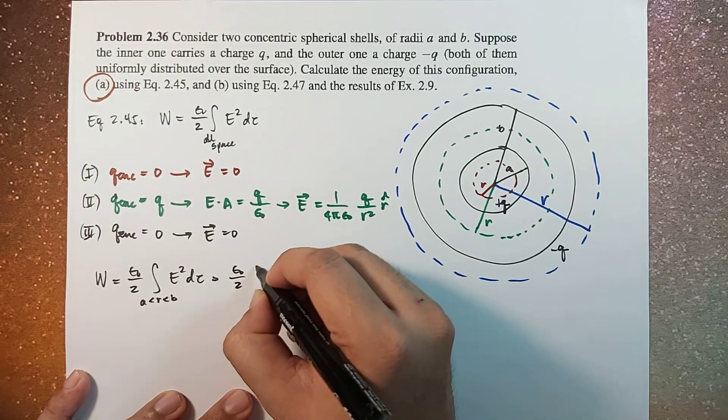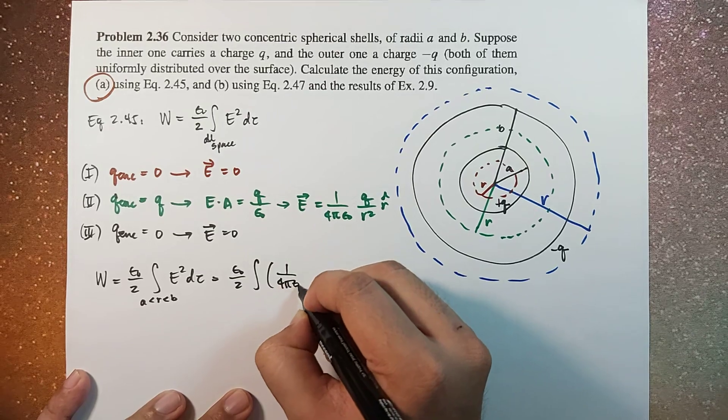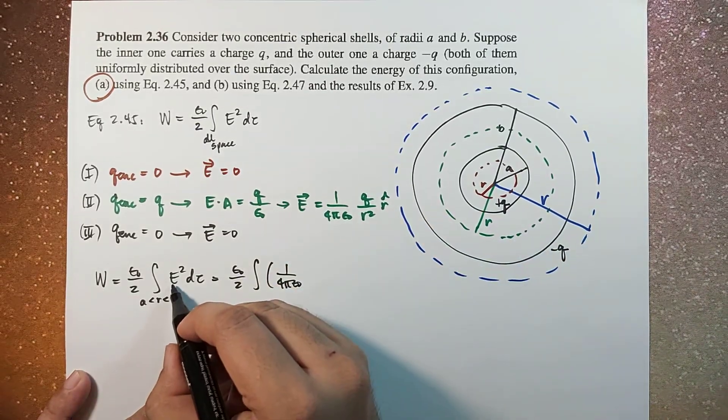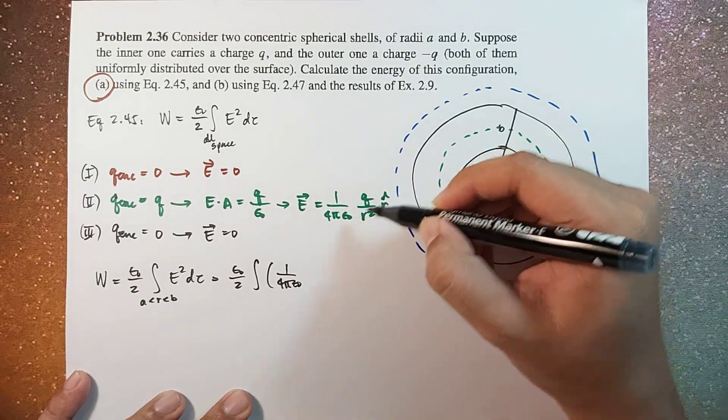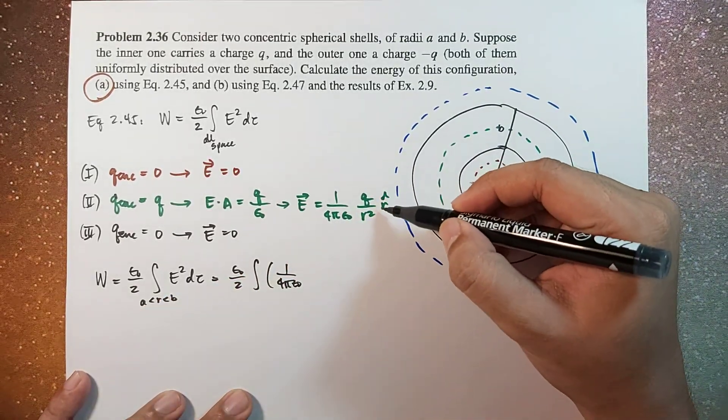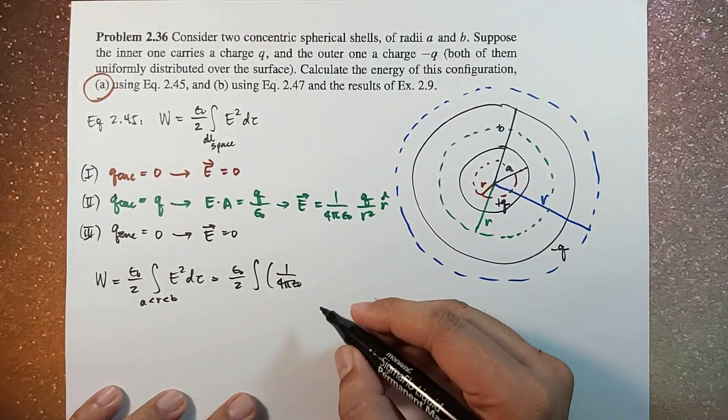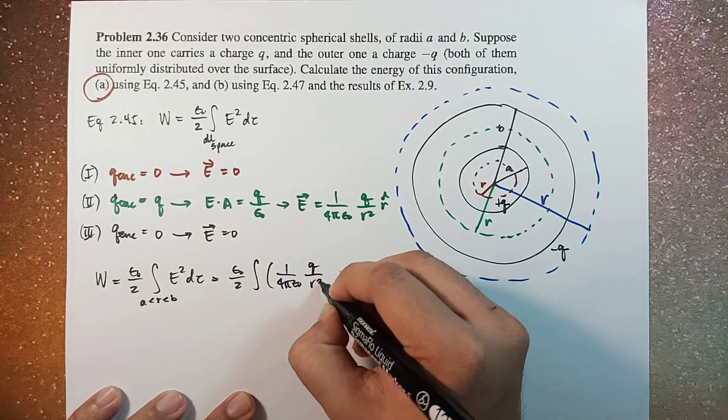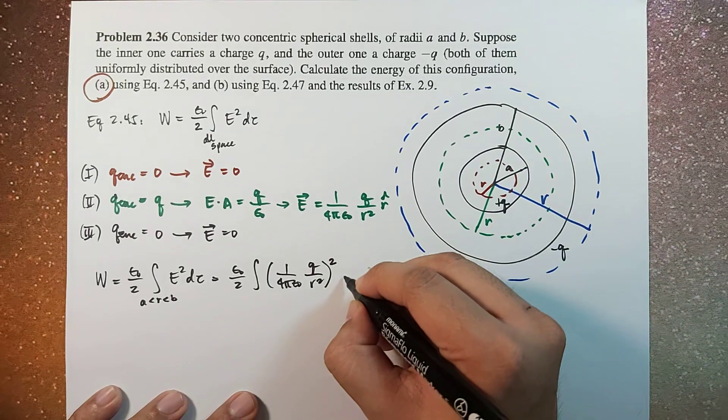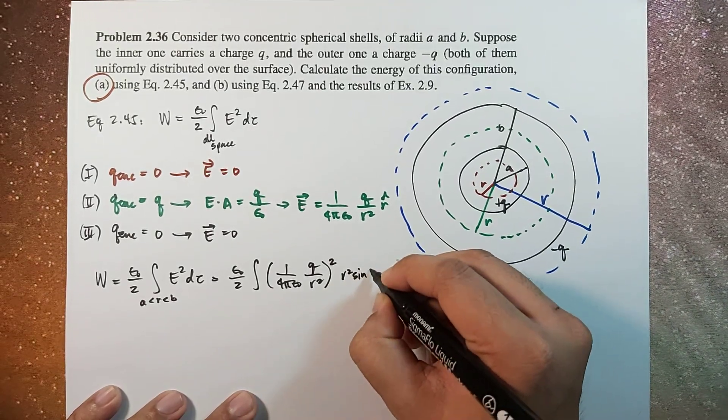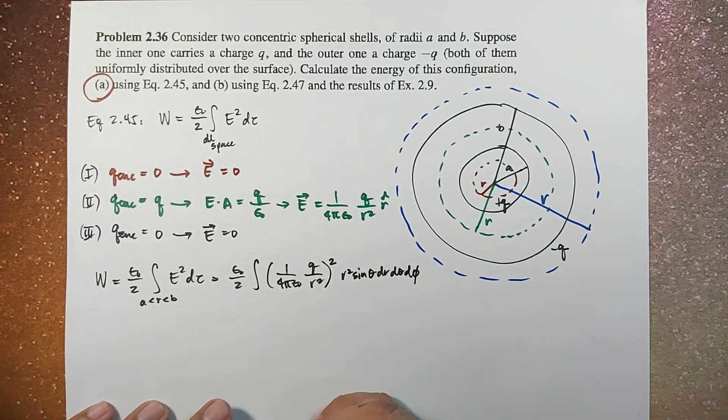So this is epsilon naught over 2 times integral of 1 over 4 pi epsilon naught. Remember, this E is magnitude, so we don't include the unit vector R hat. So this is 1 over 4 pi epsilon naught, Q over R squared, squared, and then D tau for spherical coordinate system is R squared sin theta dr d theta d phi.